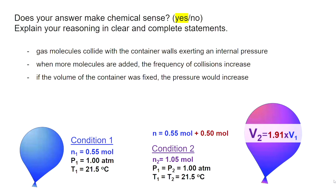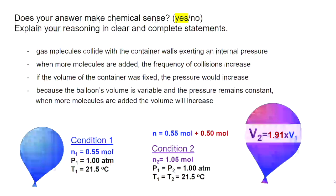If the volume of the container were fixed, the pressure would increase. But we know that the walls of a balloon are flexible. Because our balloon can expand and the pressure must remain constant, when more molecules are added, the volume will increase.